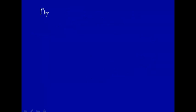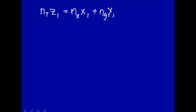Now to derive that relationship, let's consider the following. The total number of moles in the system times the mole fraction — the total mole fraction of component one in the solution, we're using the symbol Z for that — is equal to the total number of moles in the liquid phase times the mole fraction of component one in the liquid phase, plus the total moles in the gas phase times the mole fraction in the gas phase. That gives you the number of moles of component one.